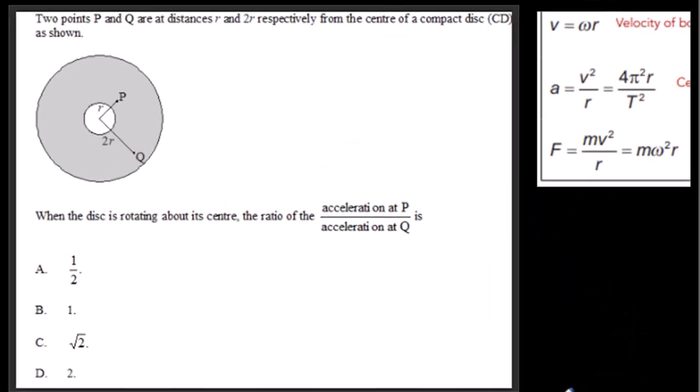Here's a typical question where a ratio of proportionality equation makes the question really easy. Pause the video, read the question over, give it a try, and then come back and see how it's done with the ratio of proportionality. So we're looking for this ratio of a at p compared to a at q.